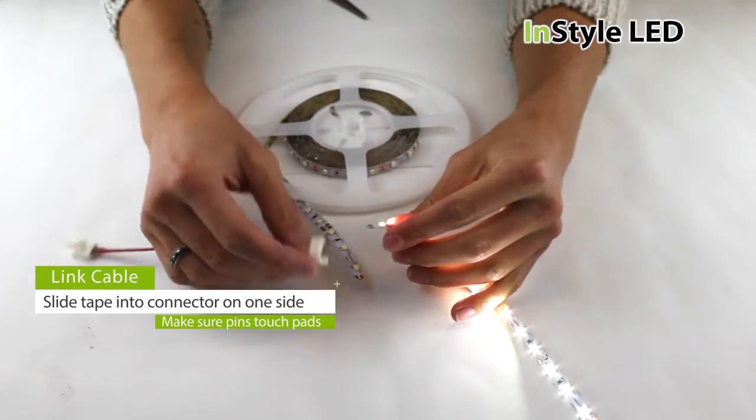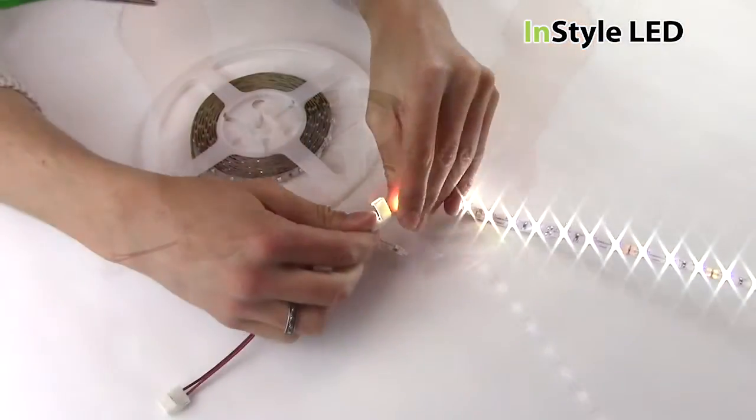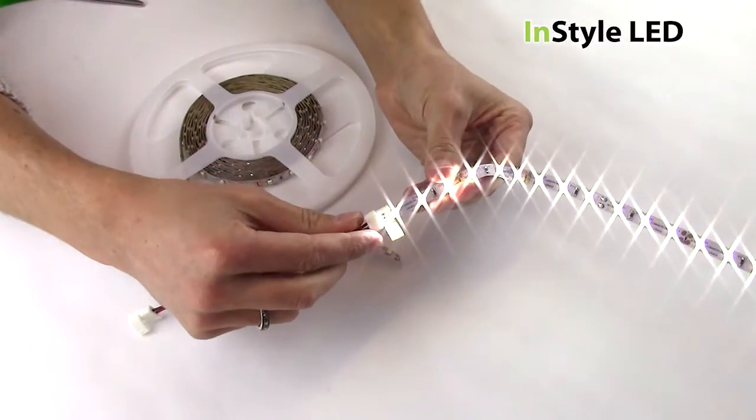The flexible corner connector allows you to bend around corners. Same as before, open the connector, slide the LED tape in, and close the connector shut.